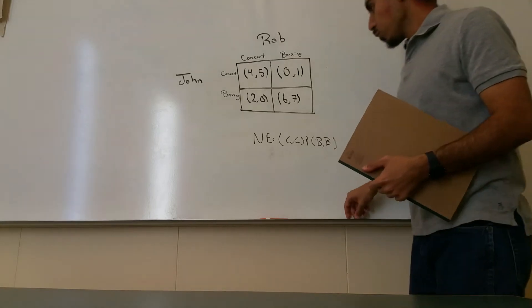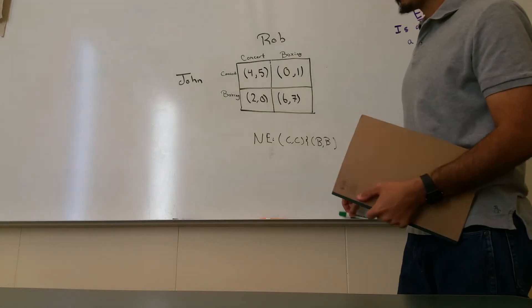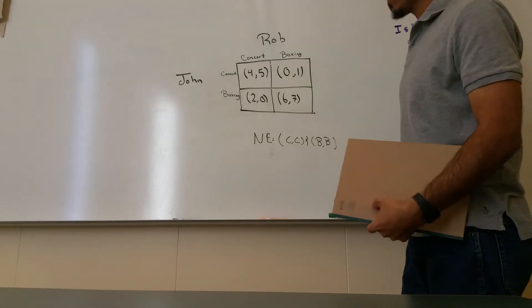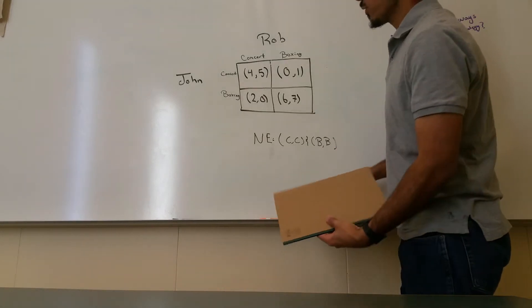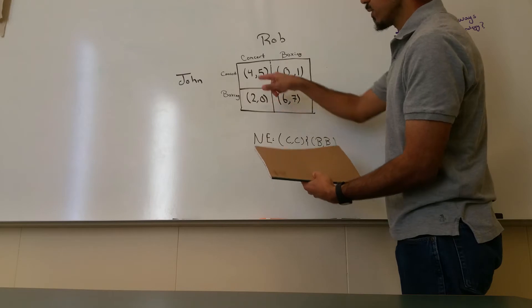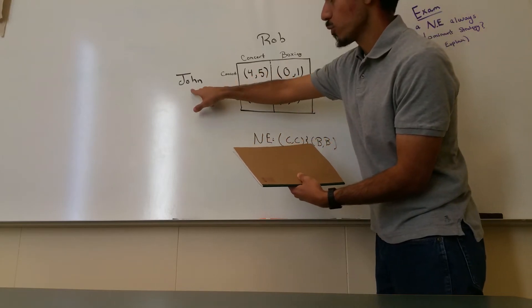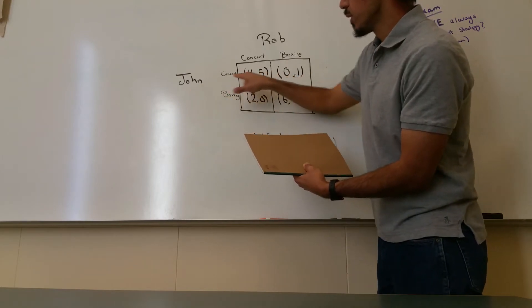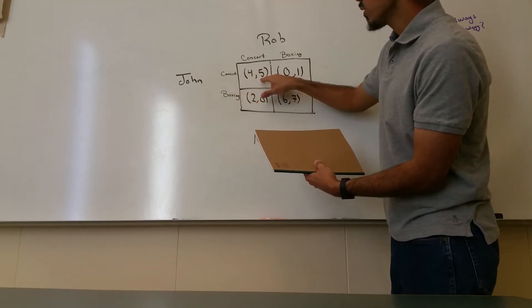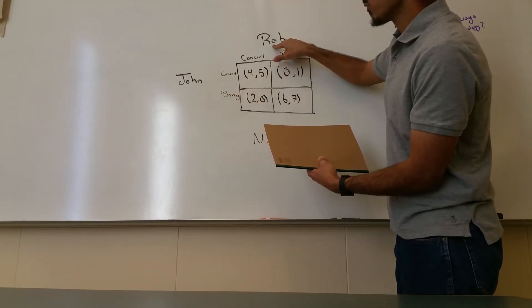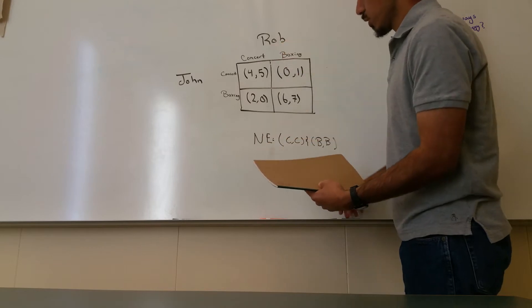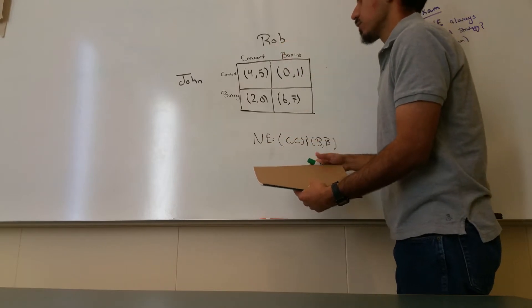We're going to find the Nash equilibrium using the double underline method. You should know that the first value always goes with the first player, and the second value always goes with the second player. So let's find it.